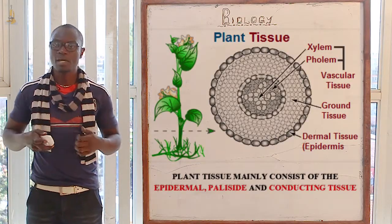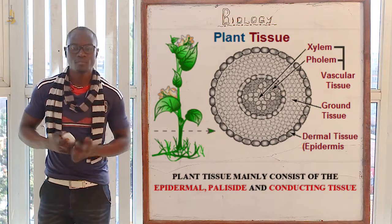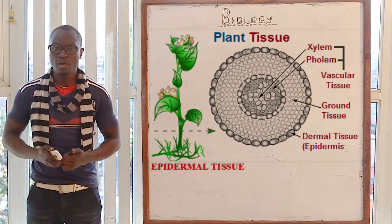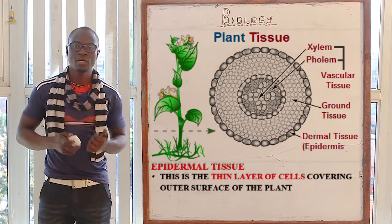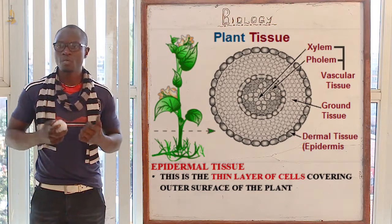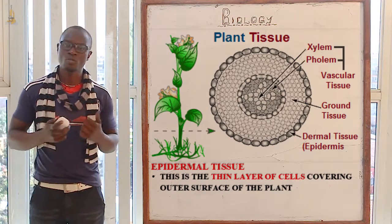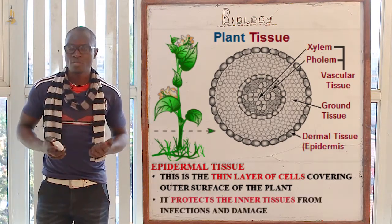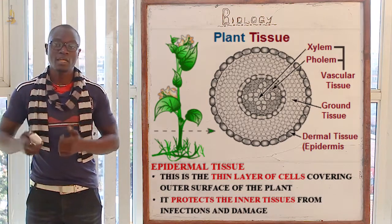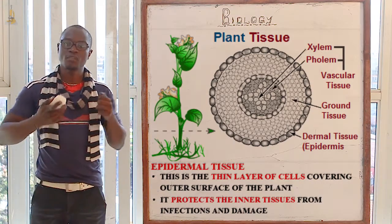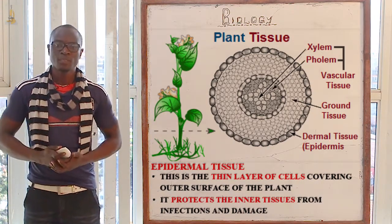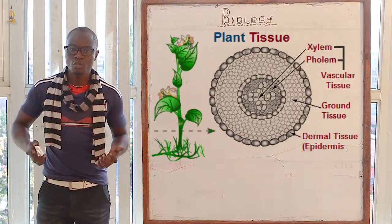Now let's look at the plant tissues. We begin with the epidermal tissue. From the word epidermis, the epidermal tissue is a thin layer of cells which mainly covers the outer surface of the plant. Its function is to protect the inner tissues from infections and mechanical damage.